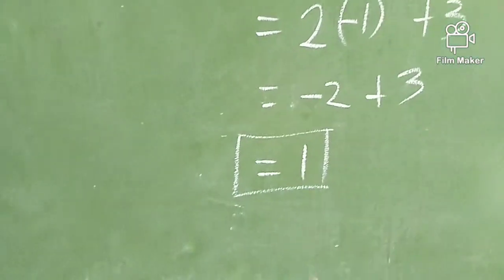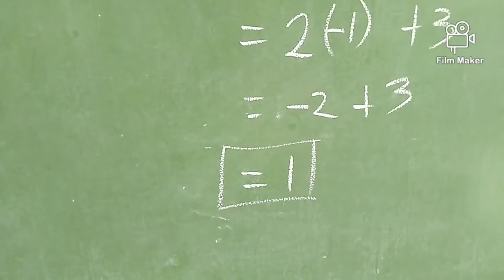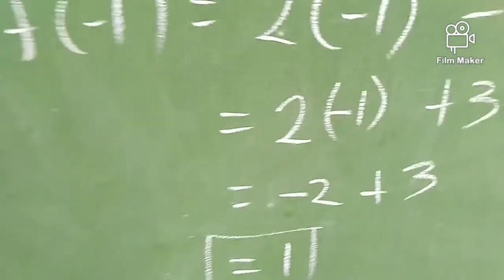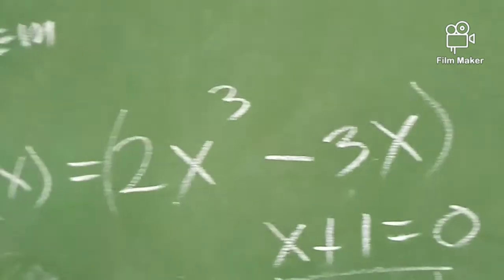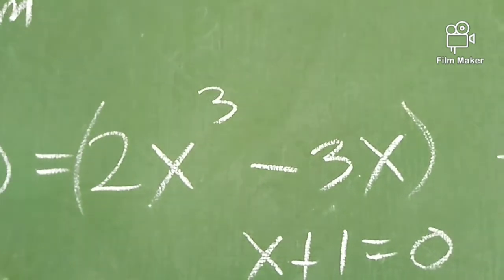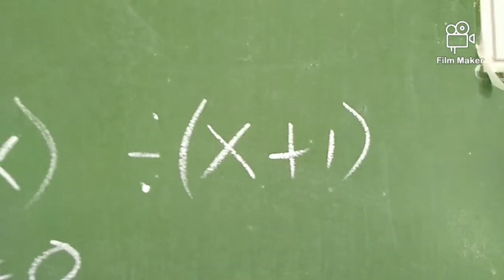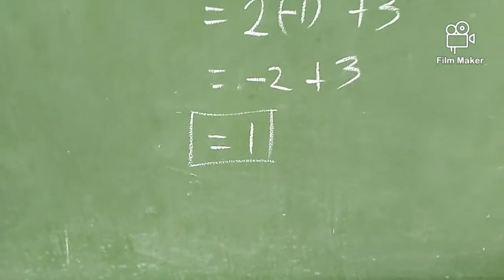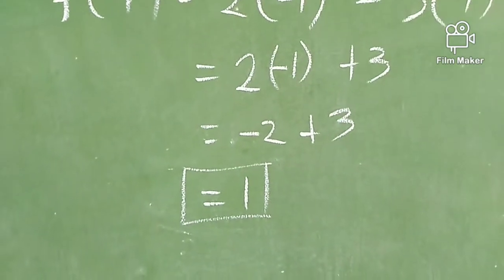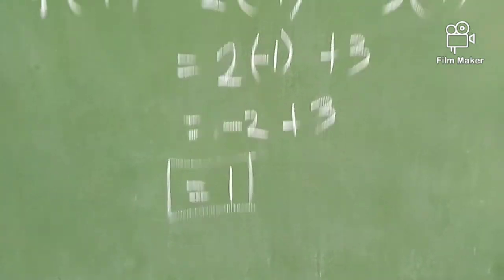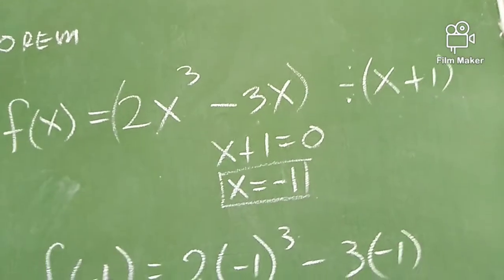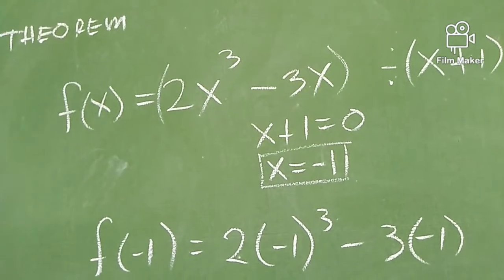So, meaning to say, meron tayong remainder 1 dito. And that concludes the remainder theorem. Ibig sabihin din, yung x + 1 is not a factor of this given polynomial function 2x³ − 3x. Nung kinumpute natin gamit ang remainder theorem or the factor theorem, nakita natin na merong natirang number. That means this is not a factor of that given polynomial function.